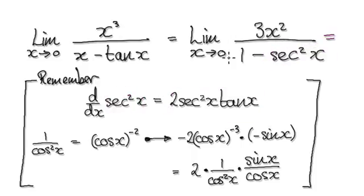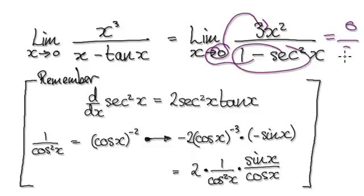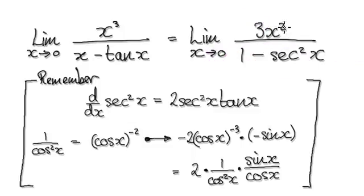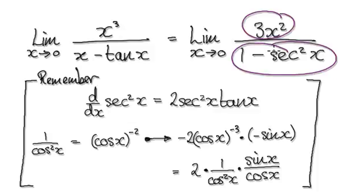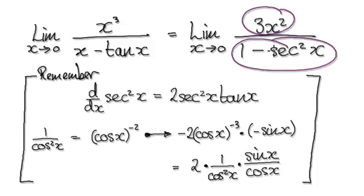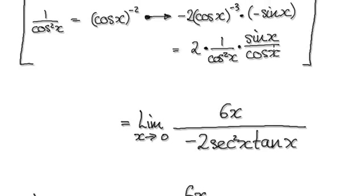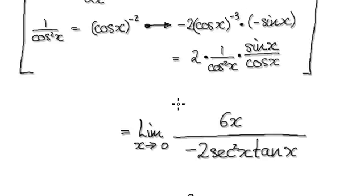Earlier we were at a stage where we've got 0 over 0 — that's an indeterminate form, so we can use L'Hôpital's rule. Differentiate this, and then differentiate this. That will then give you this result for the numerator and this for the denominator.